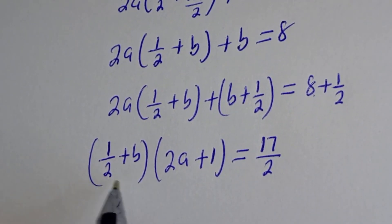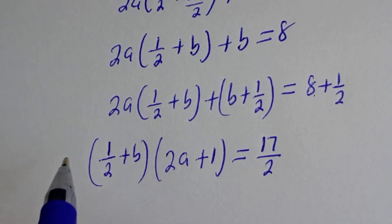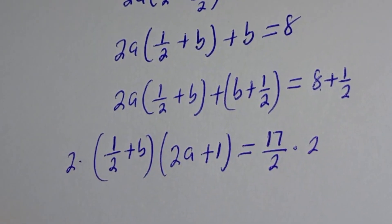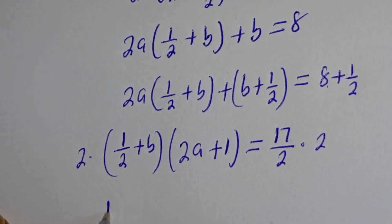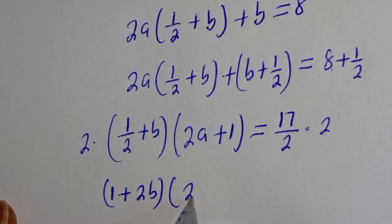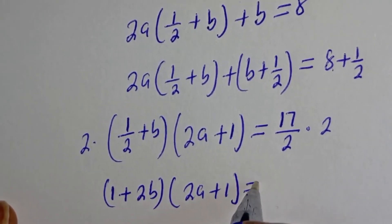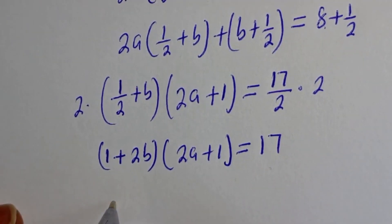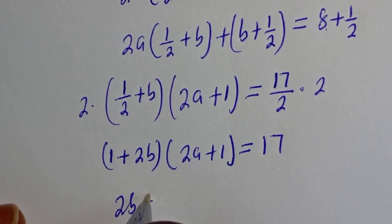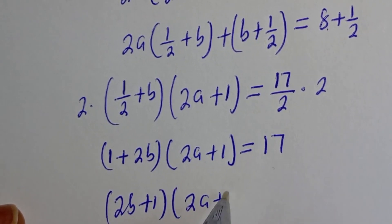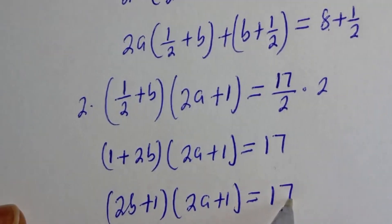We want to remove the 2s here. Let's multiply both sides by 2. This gives 1 plus 2b bracket 2a plus 1 is equal to 16, and this can be written as 2b plus 1 bracket 2a plus 1 is equal to 17.